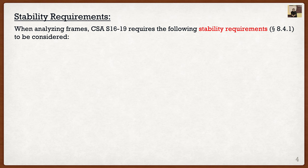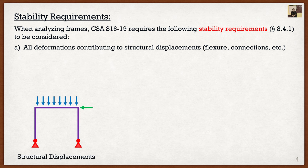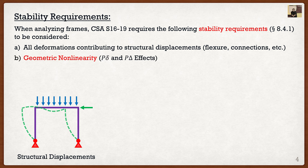In order to look at this simplified method we need to discuss a couple of things first. When you analyze a steel frame in CSA S16, clause 8.4.1 states that the following stability requirements always have to be considered. The first is that all deformations contributing to structural displacements have to be considered — basically, if you have a structure subjected to gravity and lateral loads you have to calculate displacements. Not too bad — requirement A. The second requirement is where it gets hairy: all geometric non-linearity — that is both p-small-delta and p-big-delta — has to be considered. This is the main topic of today: how do we consider this geometric non-linearity, specifically p-big-delta effects.